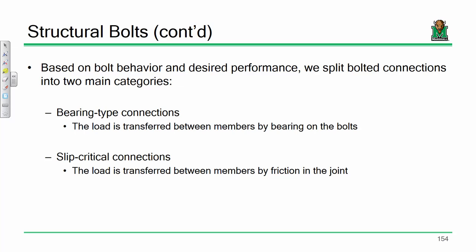All bolted connections must meet bearing-type connection requirements, but not all bearing-type connections need to meet slip-critical requirements. In a bearing-type connection, the load transfers by the plate bearing directly on the bolt — there are only two failure modes: bolt shear or plate bearing failure. Slip-critical connections must meet both requirements plus account for friction, so they're more stringent.